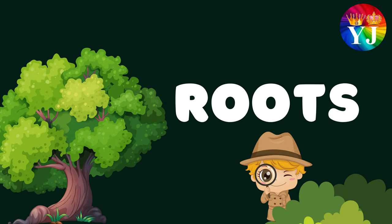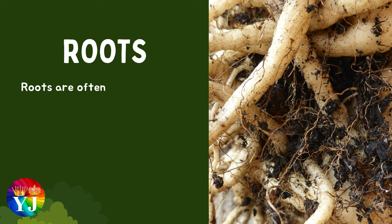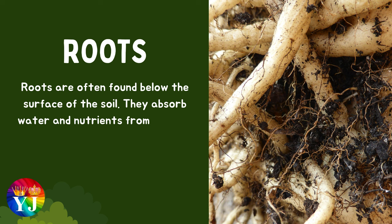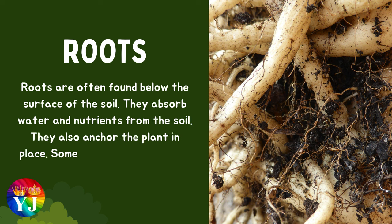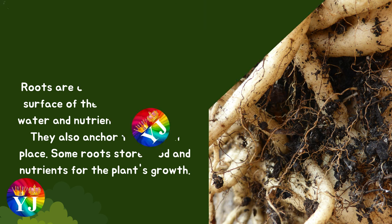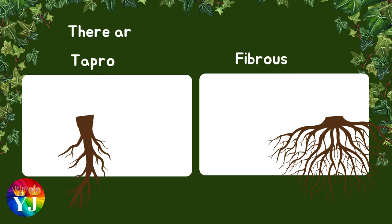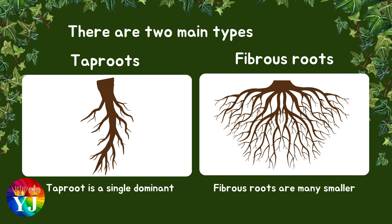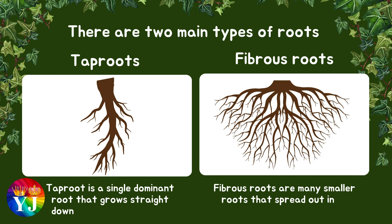Roots are often found below the surface of the soil. They absorb water and nutrients from the soil. They also anchor the plant in place. Some roots store food and nutrients for the plant's growth. There are two main types of roots: taproots and fibrous roots.